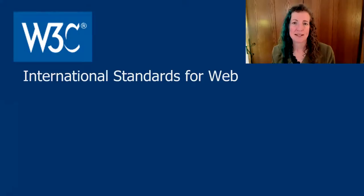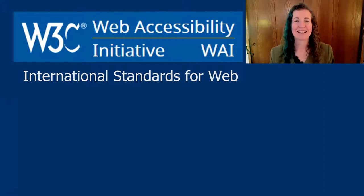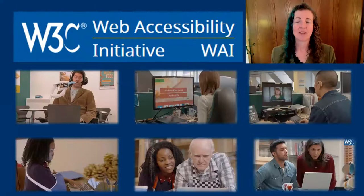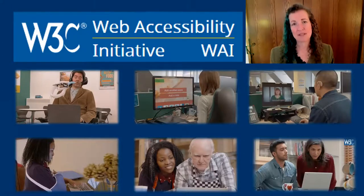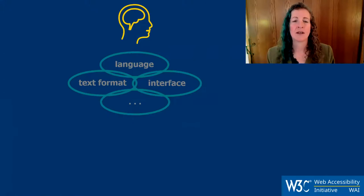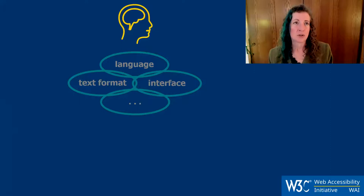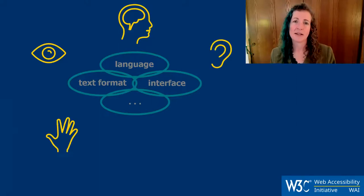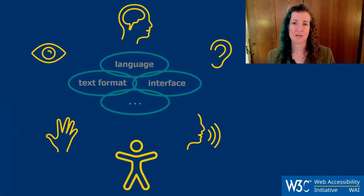I'm going to tell you about some of the work going on at the W3C — the World Wide Web Consortium — which defines the international standards for the Web. Within W3C, we have a group called the Web Accessibility Initiative, or WAI. WAI focuses specifically on people with disabilities. At W3C, we look at all disabilities, including vision, hearing, motor, physical, and speech — the broad range of accessibility needs.